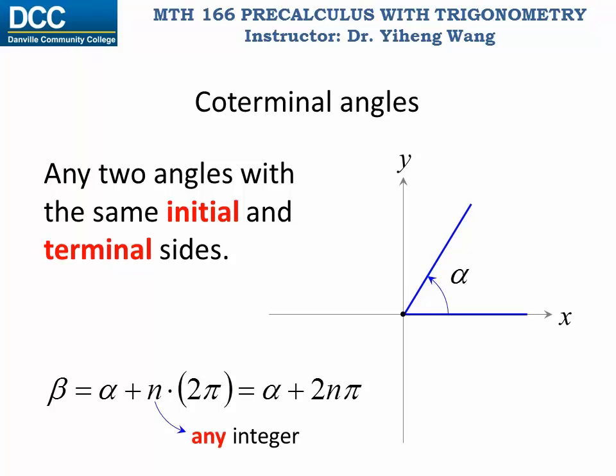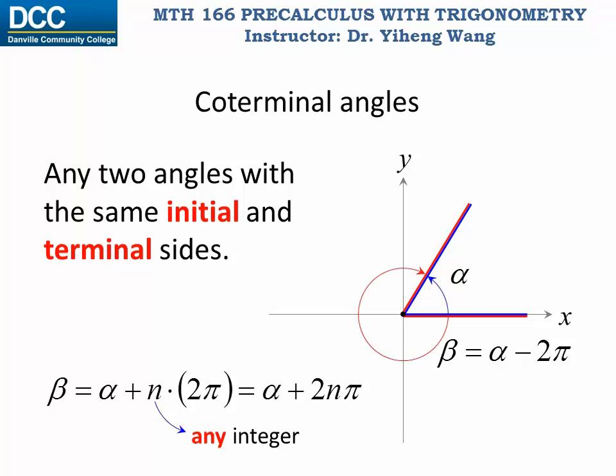Therefore, as an example, angle beta is a co-terminal angle of alpha where beta equals alpha plus one revolution, 2π. This different angle beta — which is a negative angle — is also a co-terminal angle of alpha; in this case beta equals alpha minus 2π. As you can probably tell, you can find an unlimited number of co-terminal angles for a given angle.